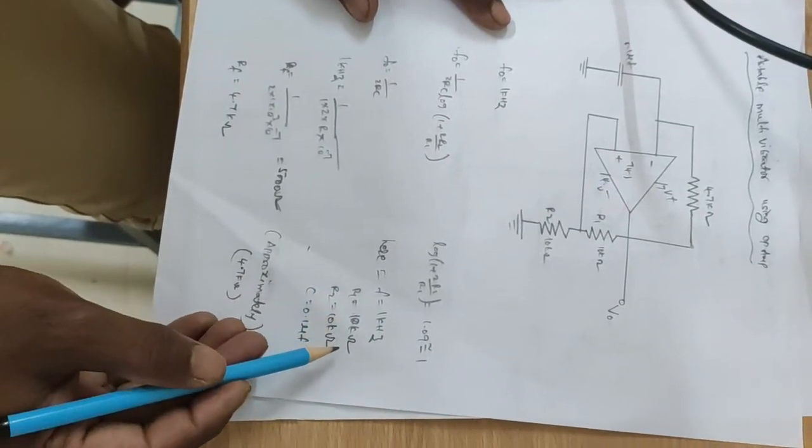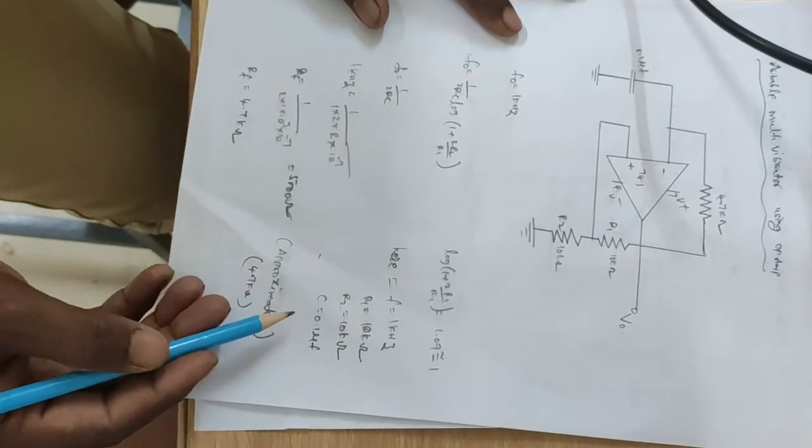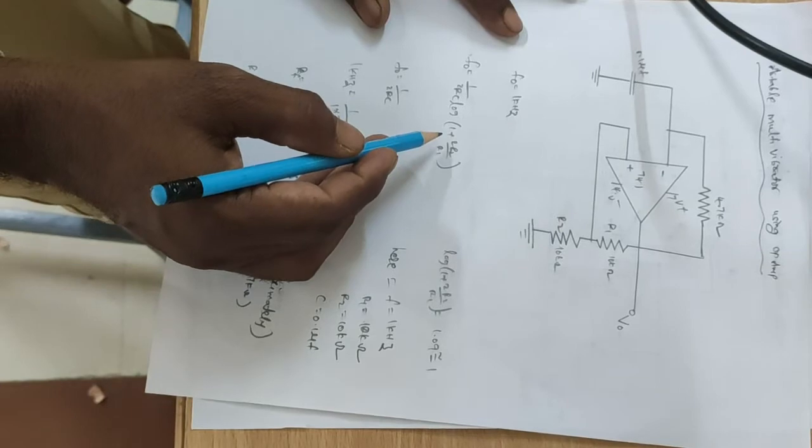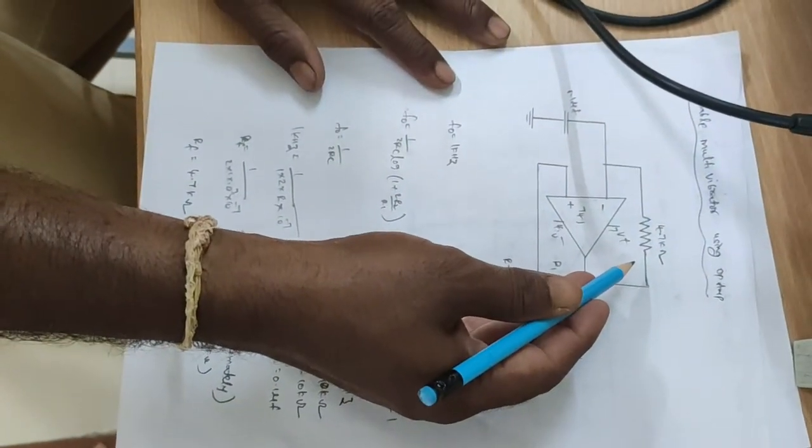R1 equal to 10 kilo-ohms, and R2 is also 10 kilo-ohms, and capacitor equal to 0.1 microfarad. These values are substituted in this formula and we find out the feedback resistance, that is Rf.